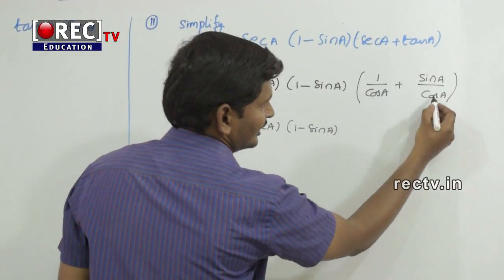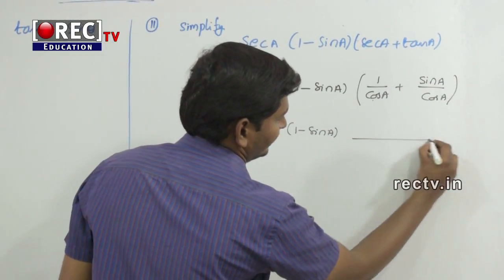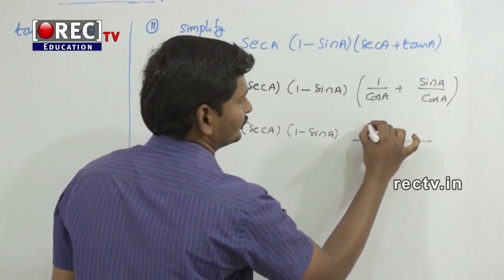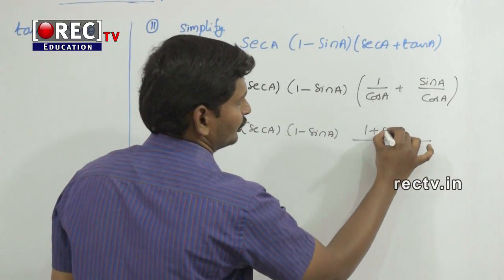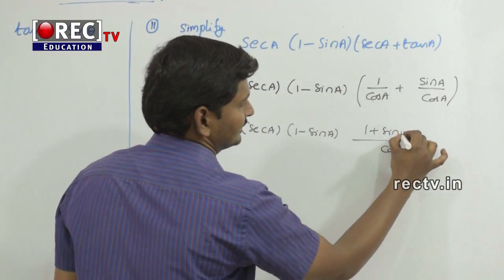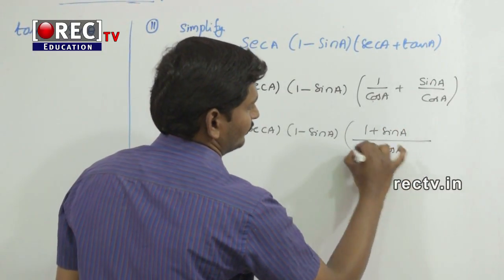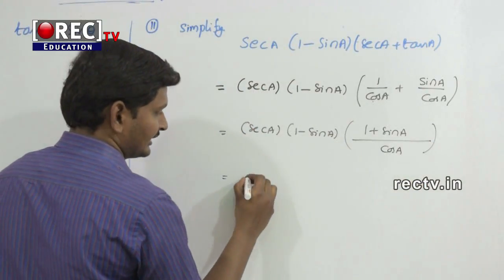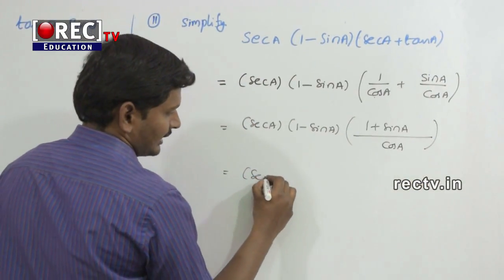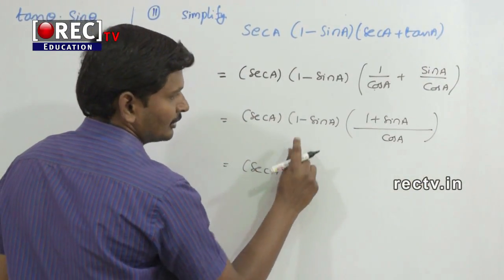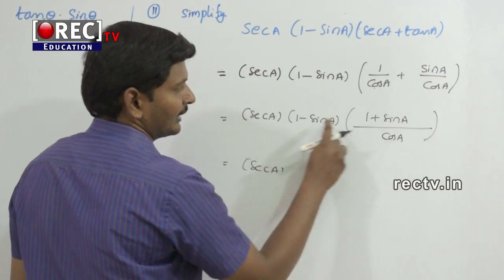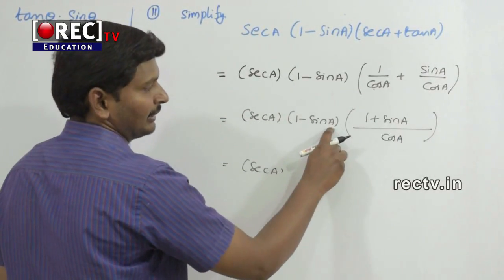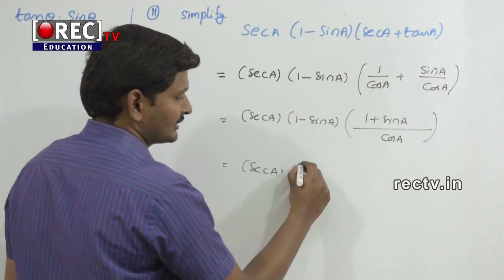The denominator is cos a for both sec a and tan a, so the LCM is cos a. Write both numerators directly: 1 plus sin a. That gives sec a into 1 minus sin a, and applying the identity a plus b into a minus b equals a squared minus b squared.